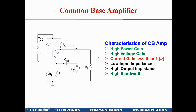What are the characteristics of the CB amplifier? It has high power gain, high voltage gain, and a current gain less than one — the current gain is almost alpha. The current drawn from the source is IE whereas what goes to the output is IC, and their ratio is alpha. It also has low input impedance.